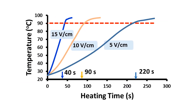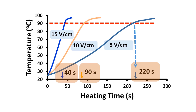In this graph, we can observe that heating time could be reduced from 220 seconds to 90 seconds and then to 40 seconds when applied voltage is increased from 5 V/cm to 10 V/cm and then 15 V/cm respectively. Therefore, higher the applied voltage, faster the heating process.